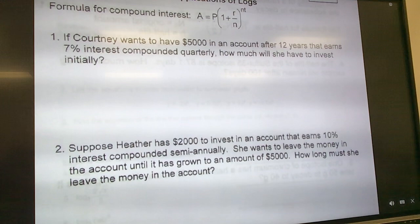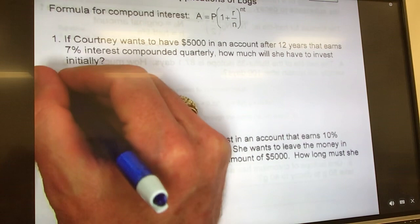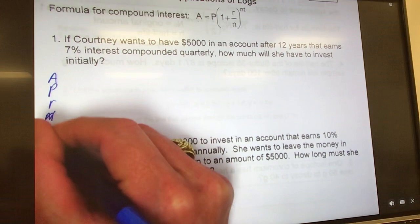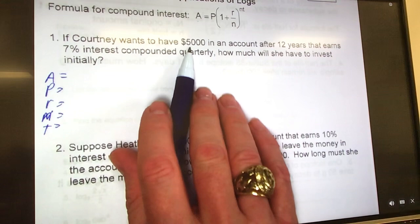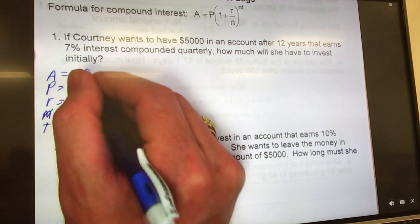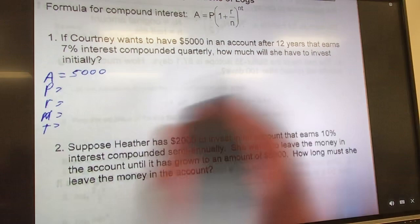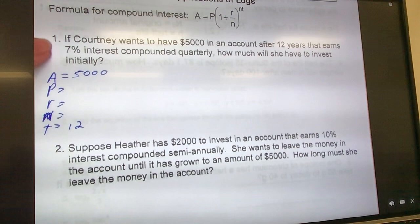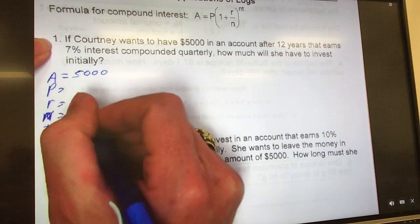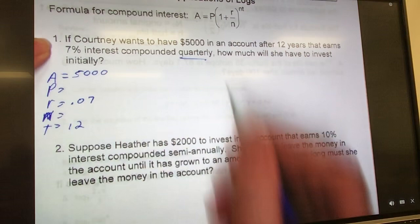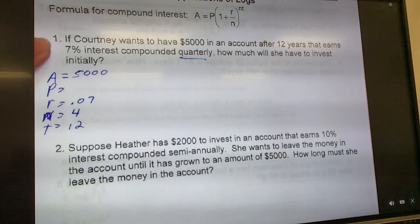First one, we don't have to because it comes out nice and clean. So A, P, R, N, and T. Now it says Courtney wants to have $5,000, so that means she wants her ending amount to be $5,000, so that's my A. And she wants that in her account after 12 years, so my time is 12. 7% interest compounded quarterly, so my rate is 0.07. Compounded quarterly means four times a year, so N is 4. Clearly I'm missing the P, so here we go.